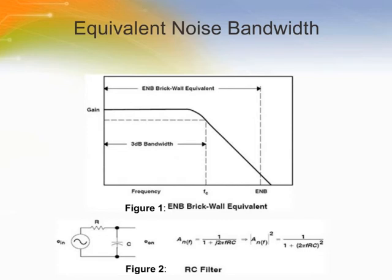In reality, there is always a certain amount of out-of-band energy transferred. The equivalent noise bandwidth, ENB, is used to account for the extra noise. Figure 1 shows the idea for a first-order low-pass filter. Figure 2 shows an example of a simple RC filter used to filter a voltage noise source, E sub IN.